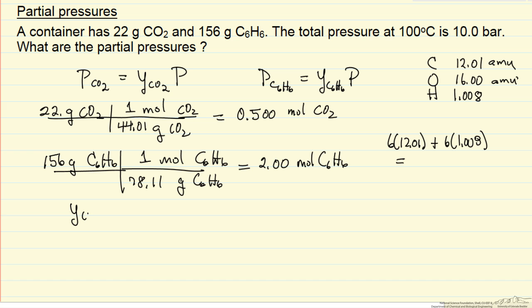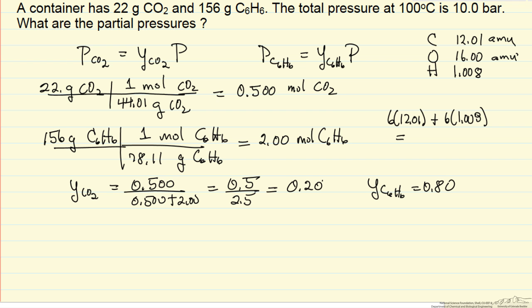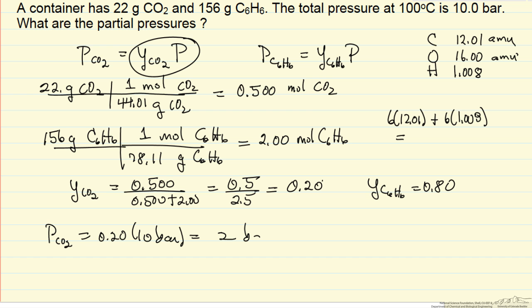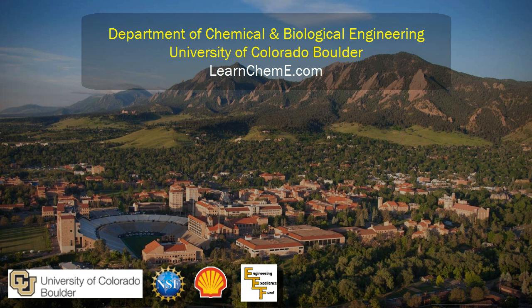The mole fraction of CO2 is 0.5 over 0.5 plus 2.0, so 0.5 over 2.5, which is 0.20. The mole fraction of benzene is then 0.80. Since the total pressure is 10 bar, the partial pressure of CO2 is 0.20 times 10, giving 2 bar. The partial pressure of benzene must be 8 bar, since the two partial pressures must add up to the total pressure of 10 bar.